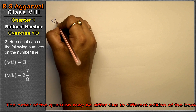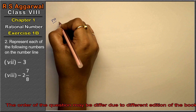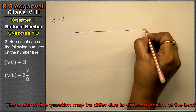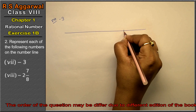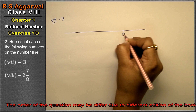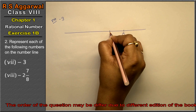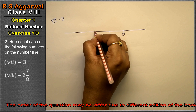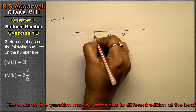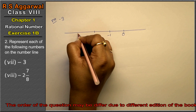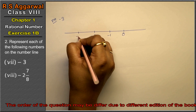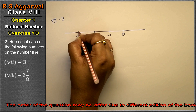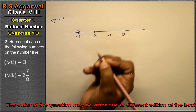Let's do 7th part. 7th part is minus 3. Yaha tak simple hai - 0, minus 1, minus 2, minus 3. This is the answer.